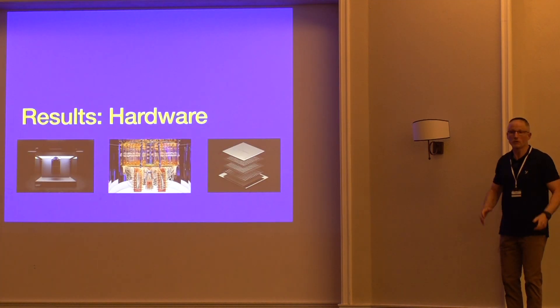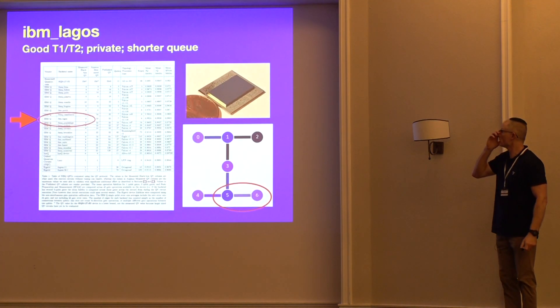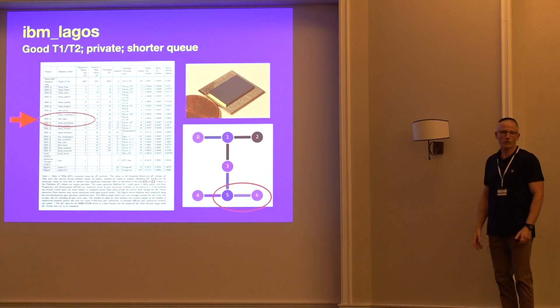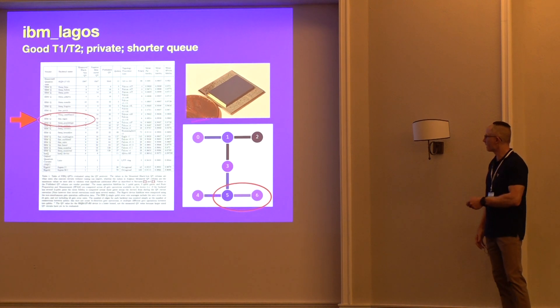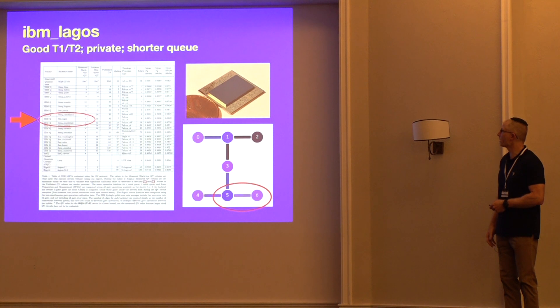Now real hardware, right? So that's the next step here. What we've done here is we've utilized the IBM Lagos machine, which seems to have good T1 and T2 times. It's private, relatively private, I guess. So there's a shorter queue. And this is the connectivity. And these are the qubits that we use for the two-qubit problem. So let's see what we did with the hardware.